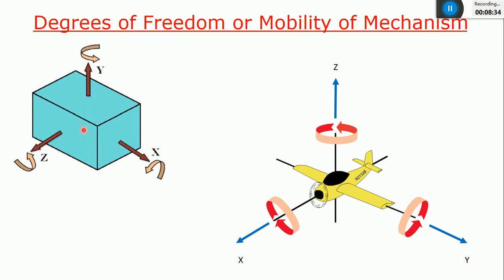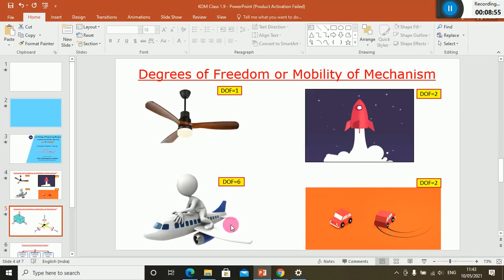Any body in space can have a maximum of six degrees of freedom: three linear motions along x, y, z, and three rotary motions about x, y, z. The degrees of freedom of any mechanism or body is defined as the number of independent motions that body can have.